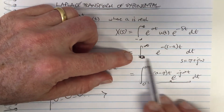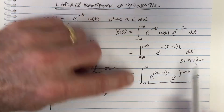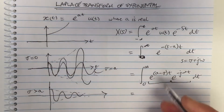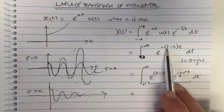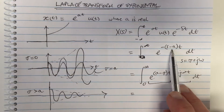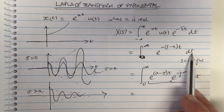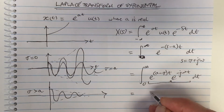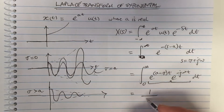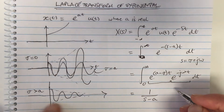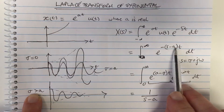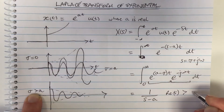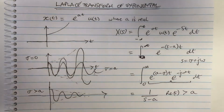We can most easily evaluate it from the form we wrote out. The integral of the exponential gives itself divided by the coefficient of t, evaluated from zero to infinity. The result is 1 divided by (s − a). This holds only when the real part of (s − a) is positive, i.e., when the real part of s is greater than a.